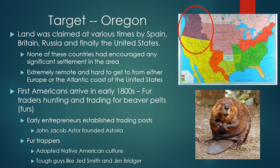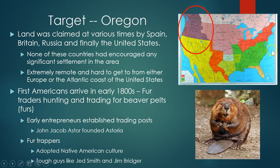The first target of American expansion is going to be Oregon. The land of the Oregon Territory was claimed at various times by Spain, Britain, Russia, and then finally the United States. None of these countries really encouraged significant settlement there, so most inhabitants were Native Americans with very few people of European ancestry. A lot of this was because the area was extremely remote — hard to get to from either Europe or the Atlantic coast. The options were traveling overland, which was very difficult with multiple mountain ranges and deserts, or sailing all the way around South America and back up the coast, a journey sometimes a year or longer.